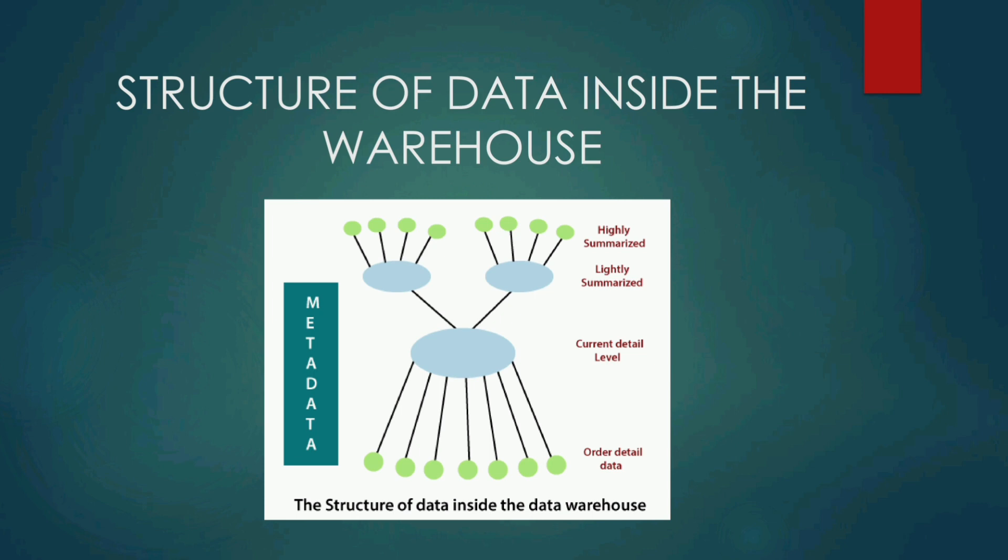Metadata is the first element of data warehouse. It's like an index of a book and defines the warehouse object. Highly summarized data is compact and directly available. Lightly summarized means low-level detail found at the current.